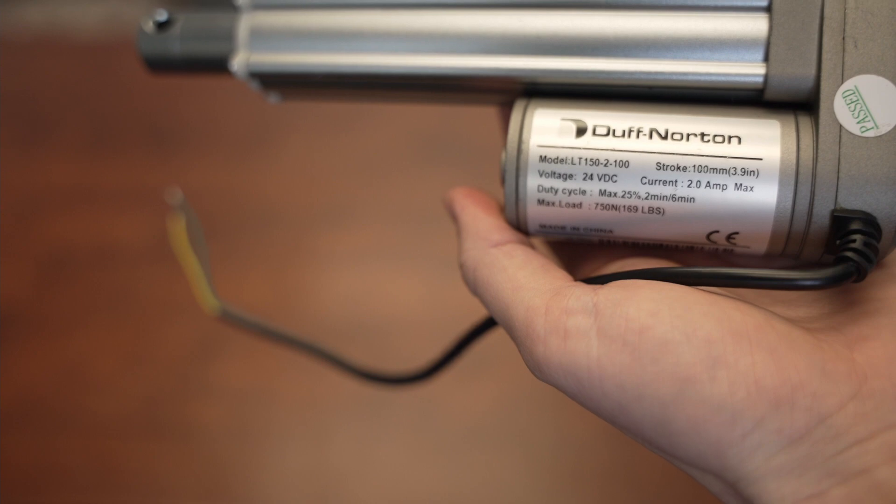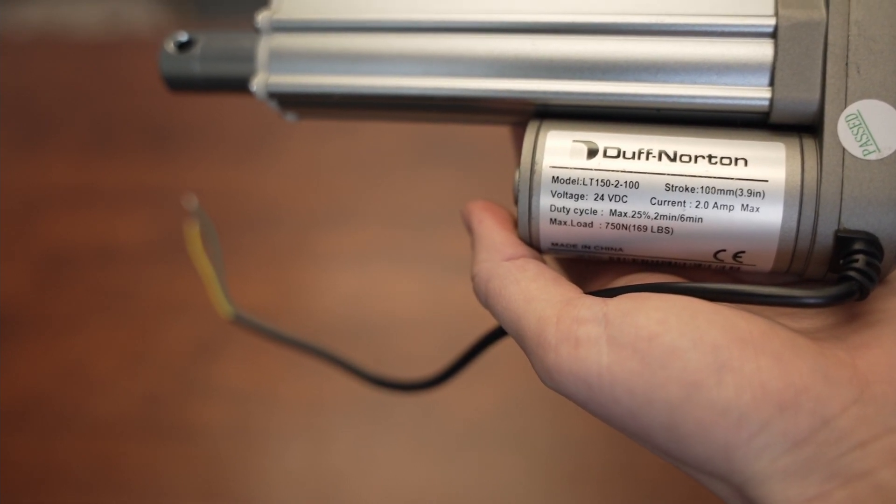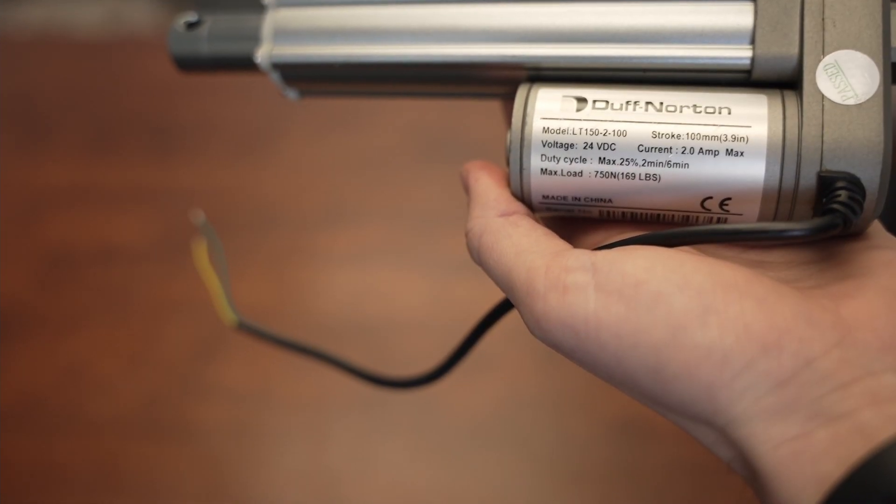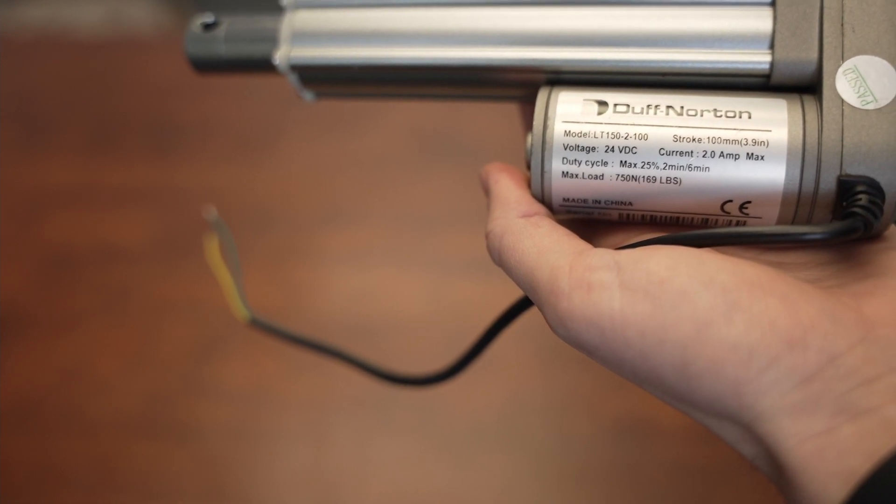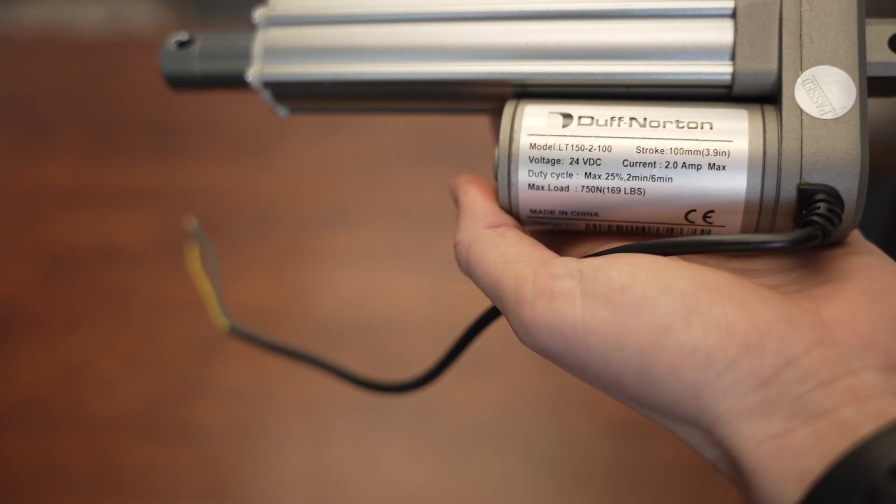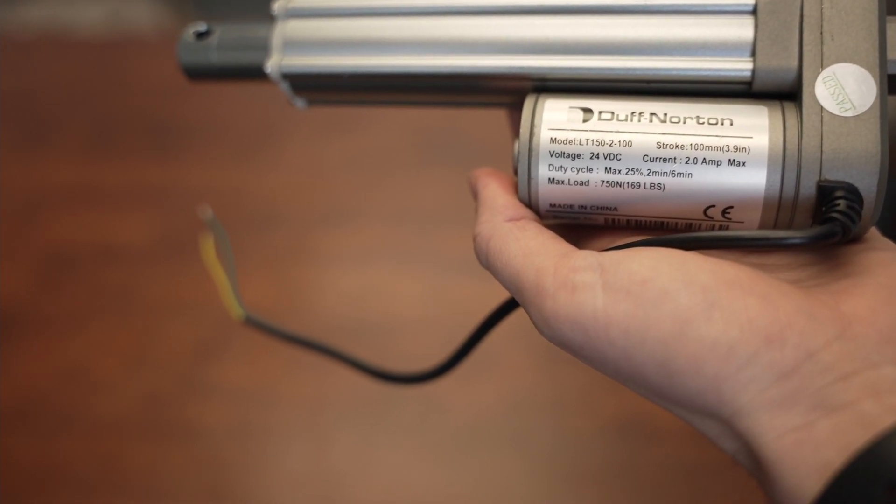This specific actuator is an LT150-2-100. It's a 169 pound actuator. It's 24 volts DC and has a stroke of 100 millimeters.